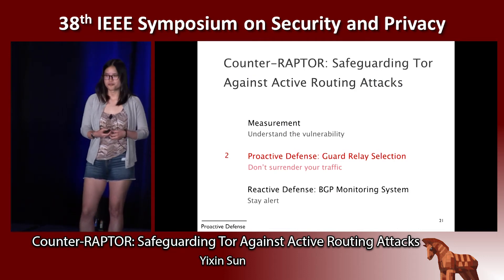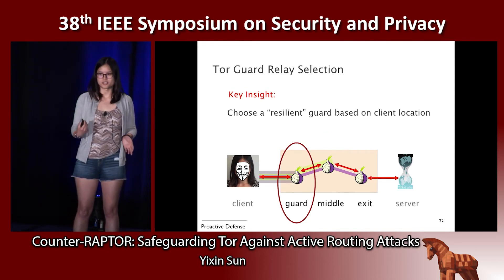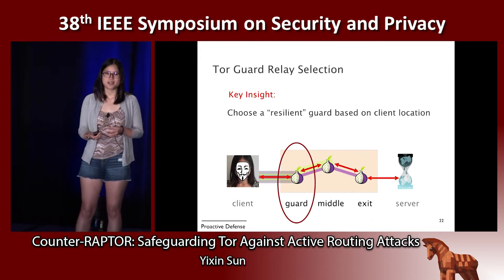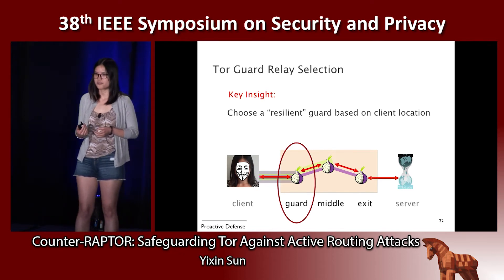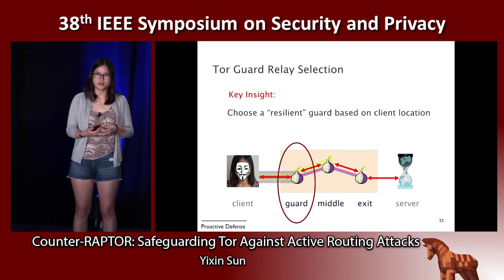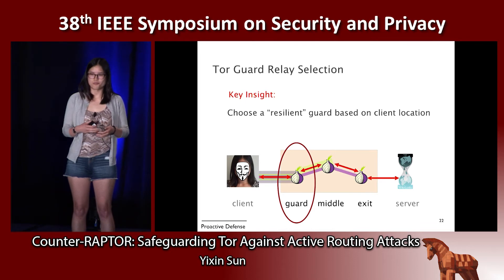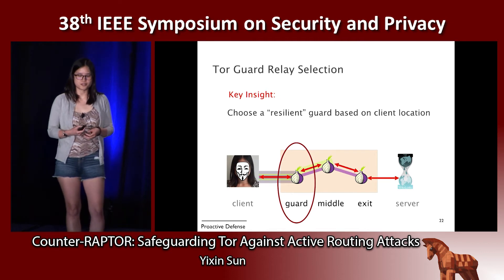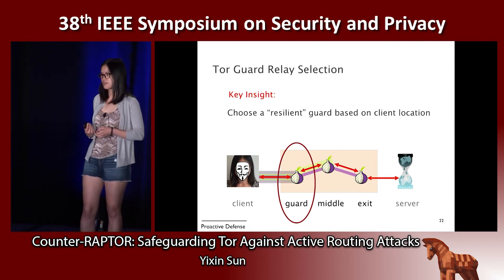Next is our new Tor guard relay selection algorithm. We focus on the guard because it holds a very important position in the Tor network: it has direct connections with the Tor client, so it knows where the client is. Also, the Tor client uses the same guard for an extended period of time, unlike middle and exit relays that are frequently reselected for each new Tor connection. The key insight is to choose a resilient guard based on the client location.